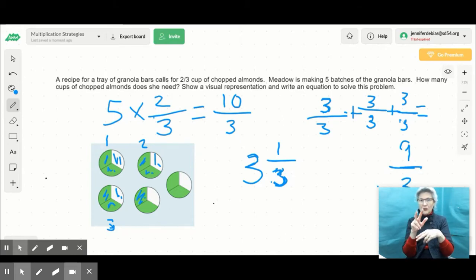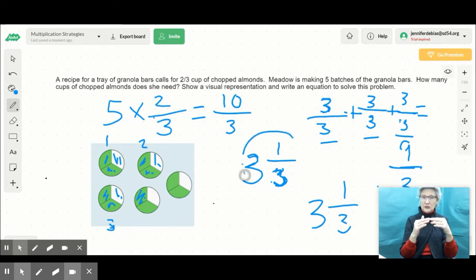And I know that 1 more third would be 1 left over. So that would be 3 wholes and 1/3. So 10/3 is equivalent to 3 and 1/3 as a mixed number.